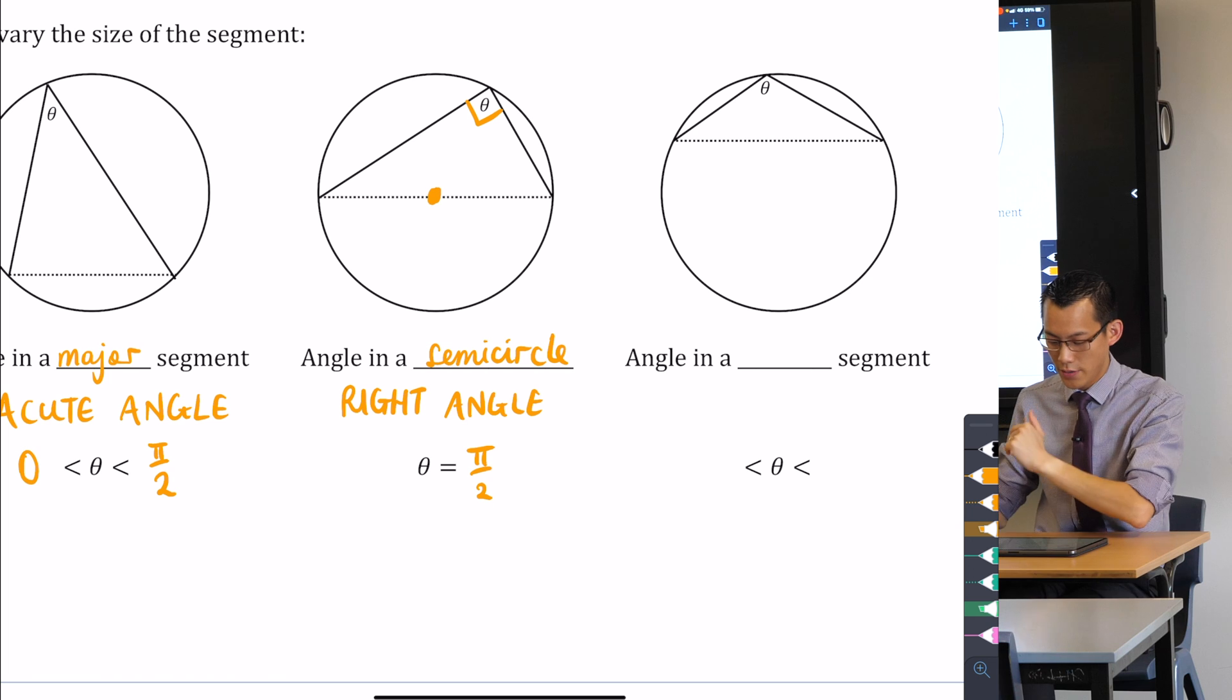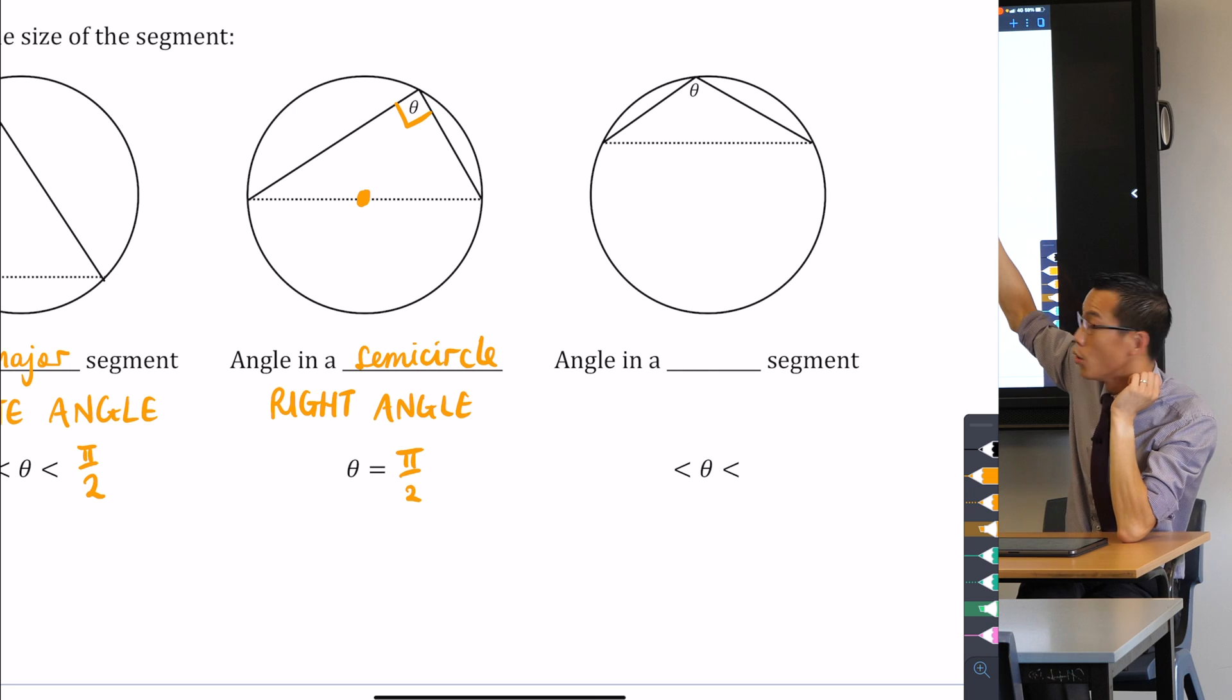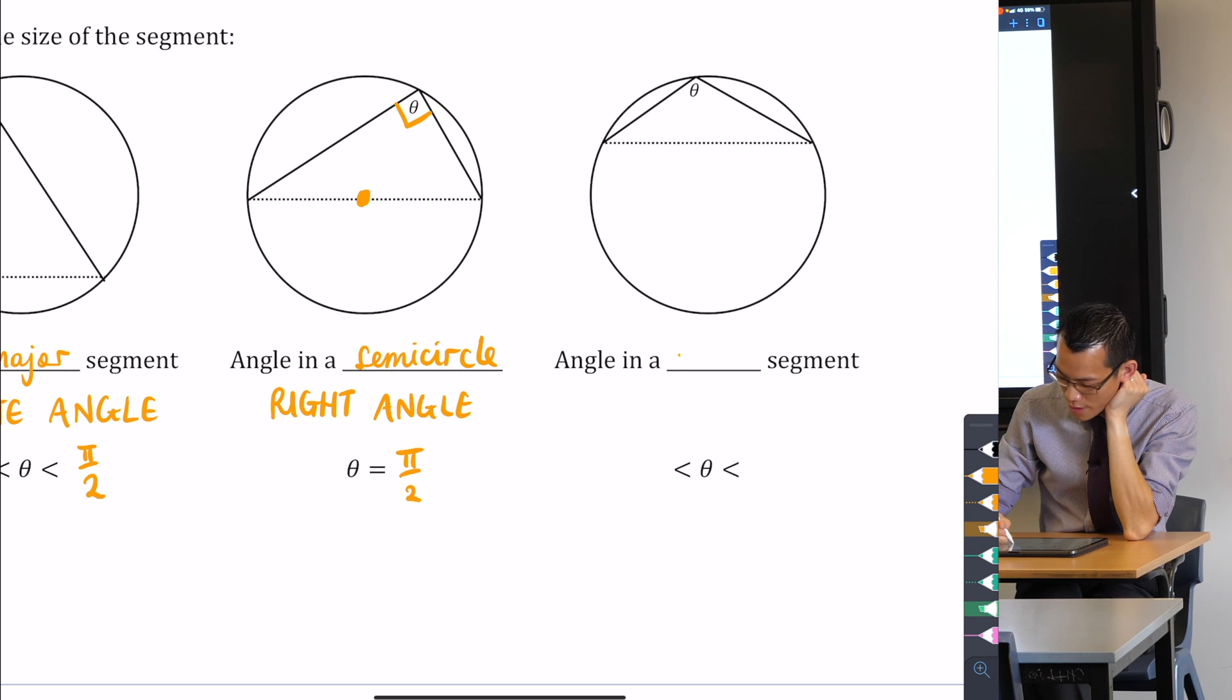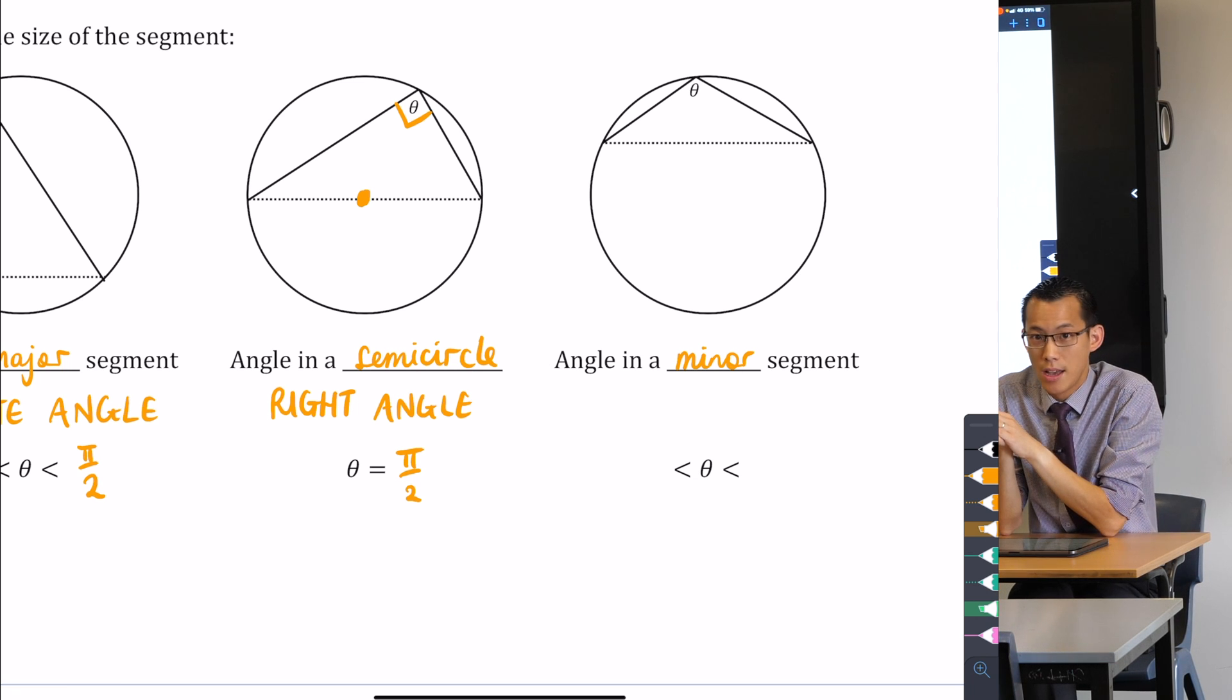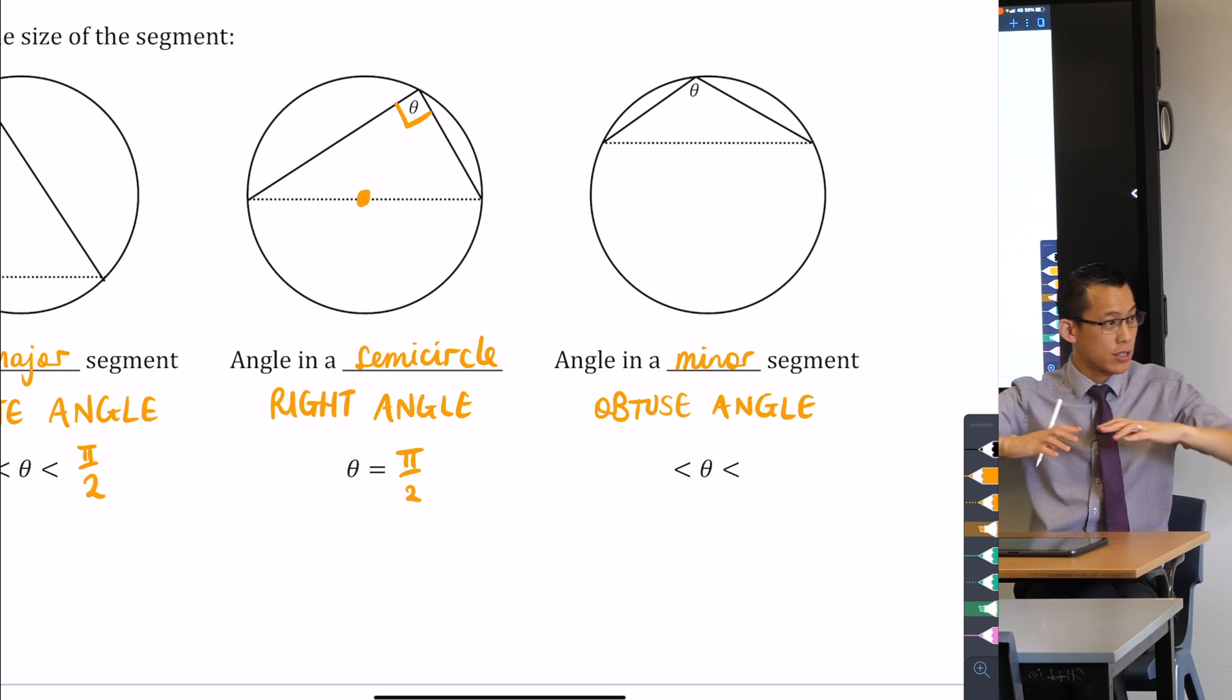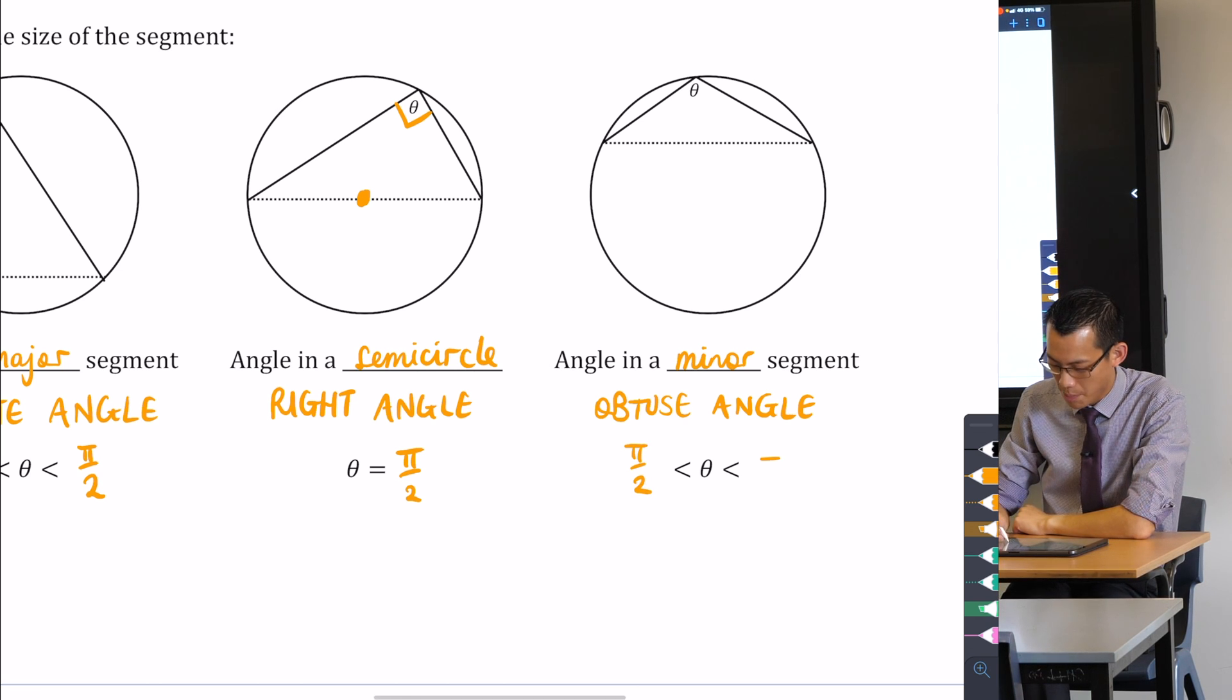And our last case over here on the right-hand side is if we sort of push that cord up so that you have a small segment up the top. It's not called a small segment, by the way, formally. The opposite of major is minor. So if you have a minor segment, what kind of angle do you get? You get an obtuse angle. It's very wide up there, you can see at the top, so it's obtuse.